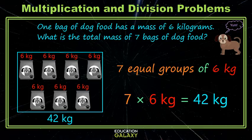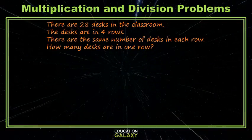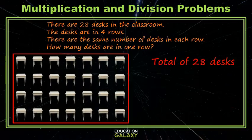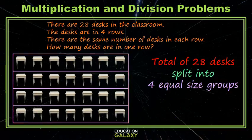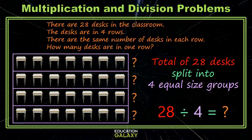Who wants to try one more? Me! Okay. We have 28 desks. They're in four rows, the same number in each row, and we want to know what that number is. So let's start with our 28 desks. We want to split them into four rows. Now when we take a total and we break it into equal size groups and we want to know how many are in each group — we use division. Now we're just doing 28 divided by four, which is seven. Seven desks in each row.